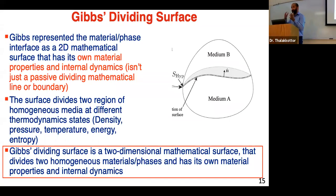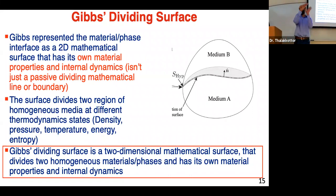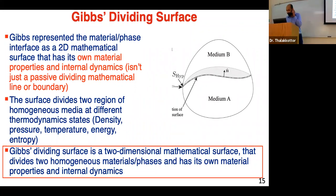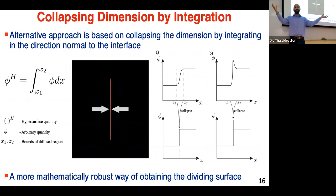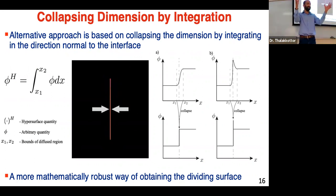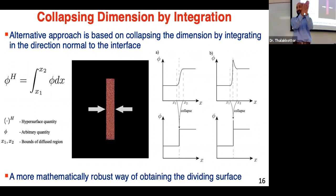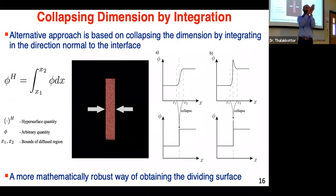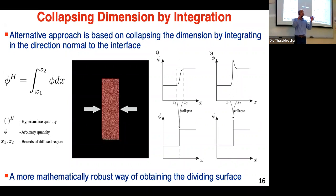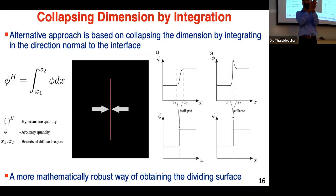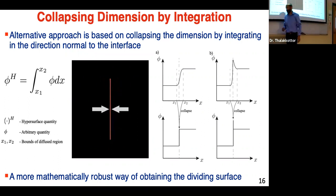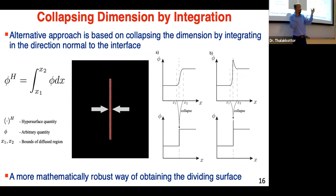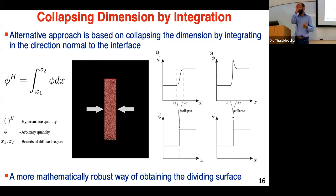What was still lacking in Gibbs's approach was a robust mathematical way to go from the physical to the mathematical interface. That's where we put in our work. The idea is: how do you go from a three-dimensional space to a surface? Mathematically, you squeeze it — you integrate in one dimension, collapsing it. If you have x, y, z and integrate in the z direction, you collapse that dimension and you're left with x and y, the surface. By doing so properly, you preserve the mass that was associated with that region.